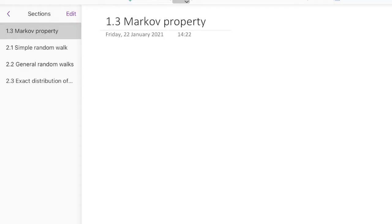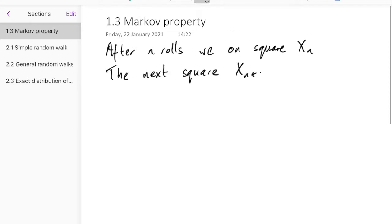So, let's let x_n be the square that we're on after n rolls. Okay, so after n rolls, we're on square x_n. And so the next square after this roll is x_{n+1}. And so what can we say about x_{n+1}?